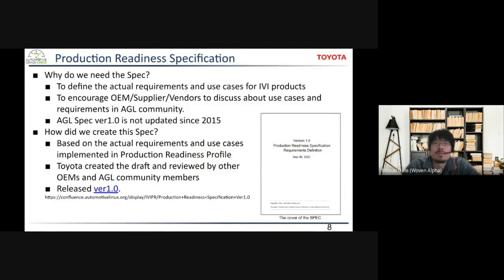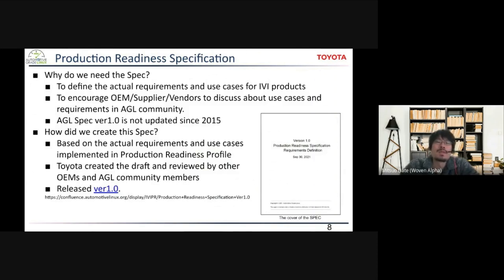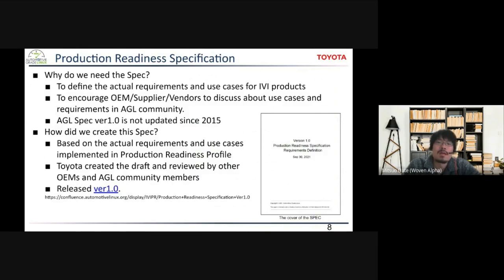I'd like to briefly introduce the production readiness specification. First, why do we need the spec? Although AGL has a code-first culture and we can discuss based on source code, defining product requirements and use cases for IVI products is quite important, because source code usually doesn't tell us high-level requirements or use cases. We wanted to discuss production requirements and use cases in the AGL community. By talking with other OEMs, Tier 1s, and AGL community members, we hope to define common requirements for modern IVI products. Although AGL UCB has its own specification, it has not been updated since 2015, so we needed to update it anyway.